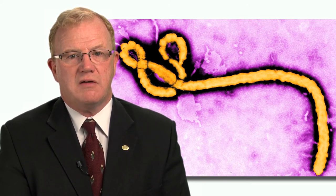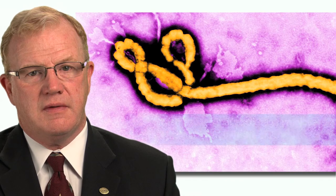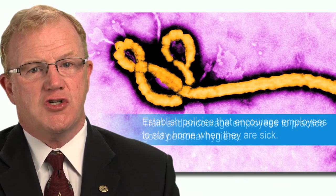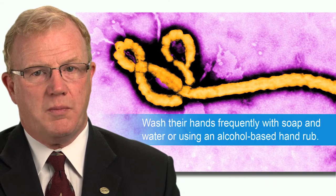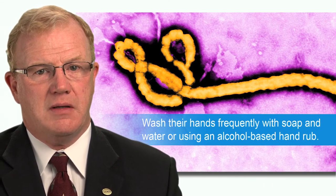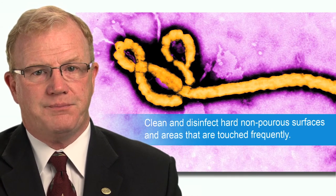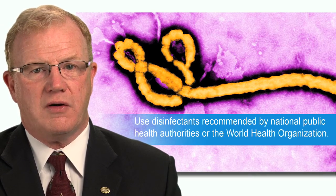These authorities believe the risk of Ebola infection is low outside of the West African countries most affected. But there are things you can do to lower the risk of infection in general, including more likely threats such as seasonal influenza. These include established policies that encourage employees to stay home when they're sick, and training employees to practice good personal hygiene, including washing their hands frequently with soap and water or using an alcohol-based hand rub. Clean and disinfect hard, non-porous surfaces and areas that are touched frequently, using disinfectants recommended by national public health authorities or the World Health Organization.